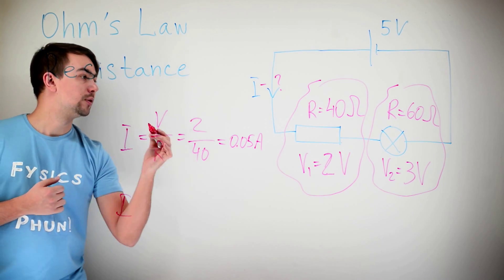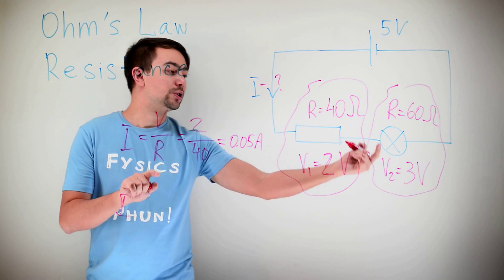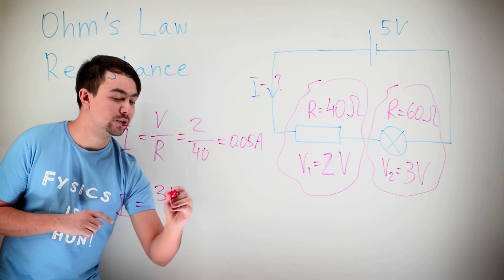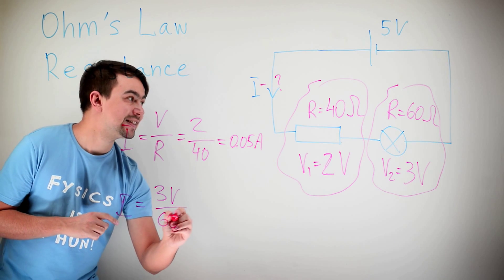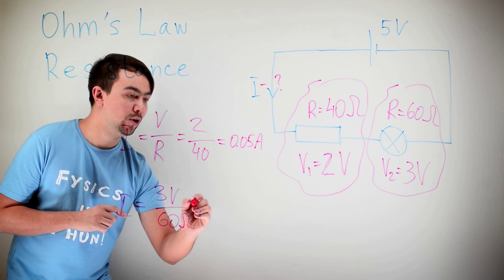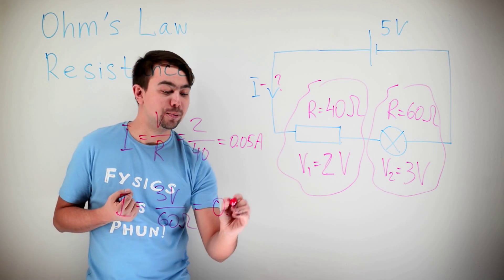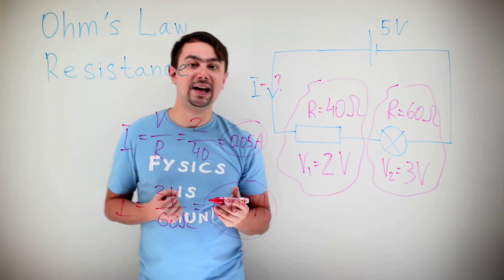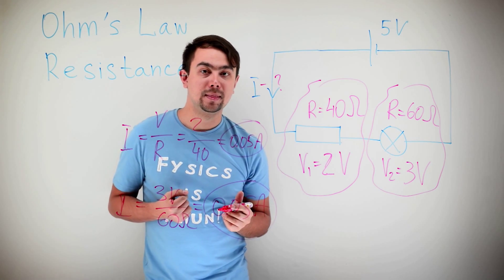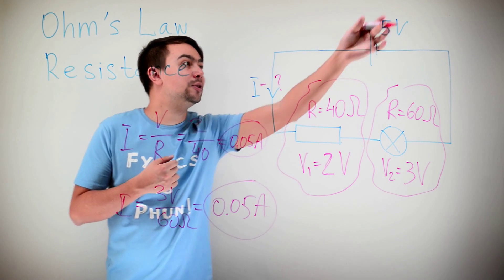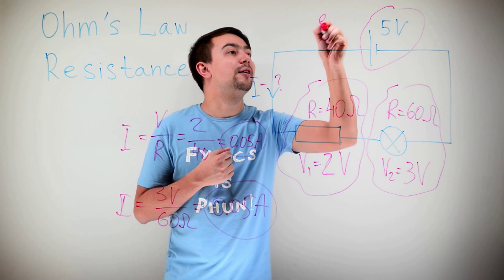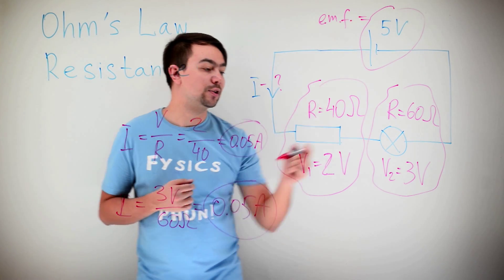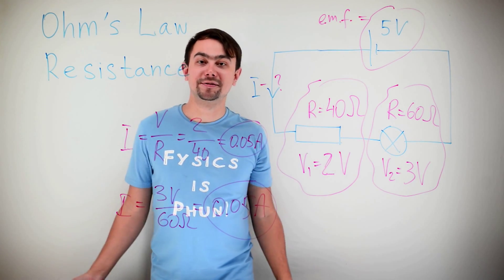Let's look at this. Current equals voltage divided by resistance. Once again, so 3 volts divided by 60 ohms, and that's once again 0.05 amps. So you see, in a series circuit, the current is the same. And the voltages add up to the EMF. So EMF is 5 and the total voltage is also 5.